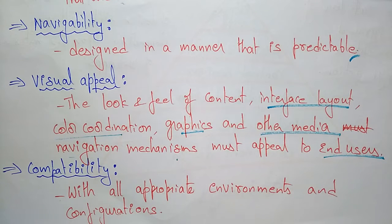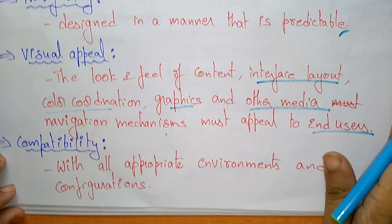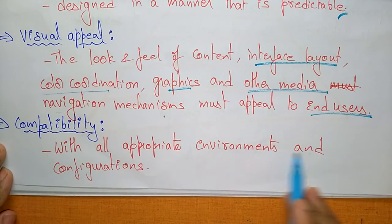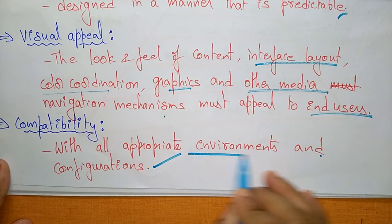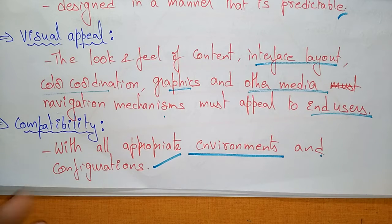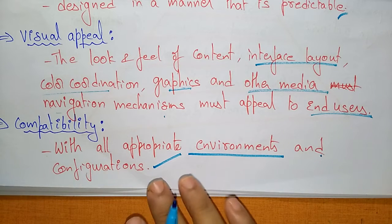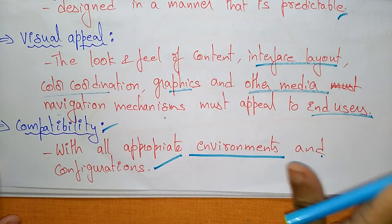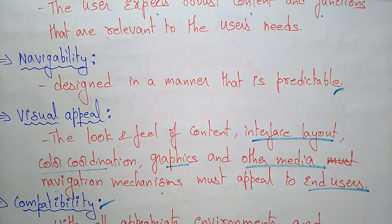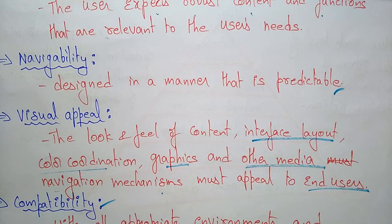Visual appearance is one of the web app design goals. Next is compatibility — your web app should be compatible with all appropriate environments and configurations. Whether the user is using Android, Apple OS, or whatever configuration the system has, it should be appropriate for all environments. If your web app can be used on all different platforms, meaning it is compatible across all platforms, then your web app design achieves the goal.